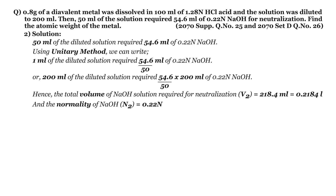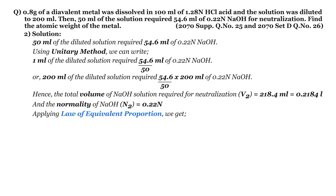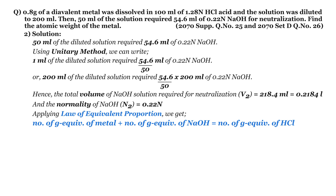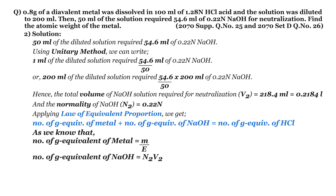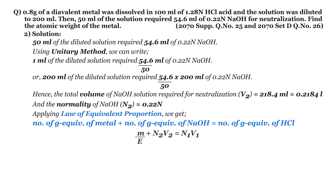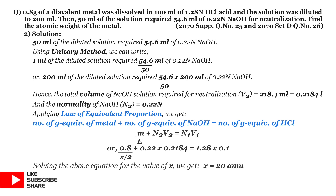Hence the total volume of sodium hydroxide solution required for neutralization V2 equals 218.4 ml or 0.2184 liter, and the normality of sodium hydroxide N2 equals 0.22 N. To find the atomic weight X we apply the law of equivalent proportion: gram equivalents of metal plus gram equivalents of sodium hydroxide equals gram equivalents of hydrochloric acid, since the metal and sodium hydroxide together neutralize the hydrochloric acid completely. So M/E + N2·V2 = N1·V1, giving: 0.8/(x/2) + 0.22 × 0.2184 = 1.28 × 0.1. Solving for X we get X equals 20 AMU.